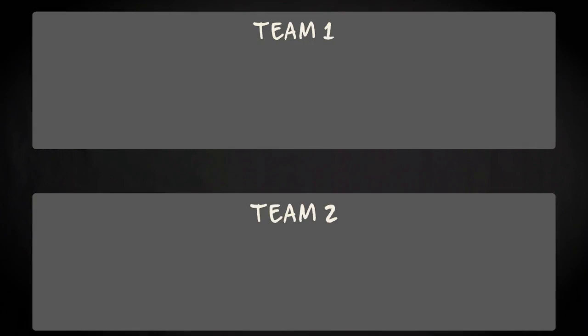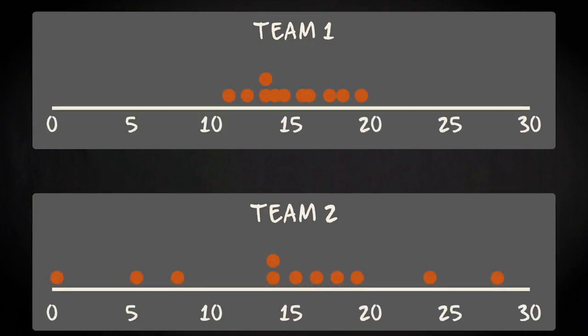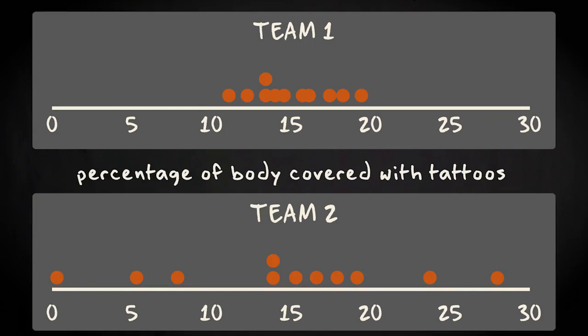Imagine two football teams. What you see here are dot plots, representing the distribution of the variable percentage of body covered with tattoos in these two teams. The horizontal line represents this variable, and the dots stand for the 11 individuals in each team.